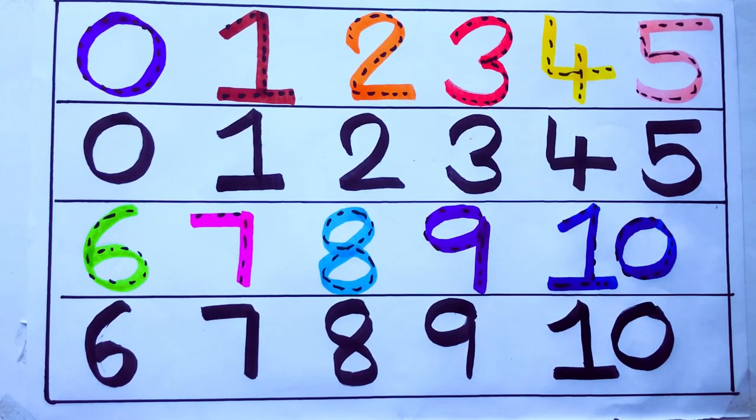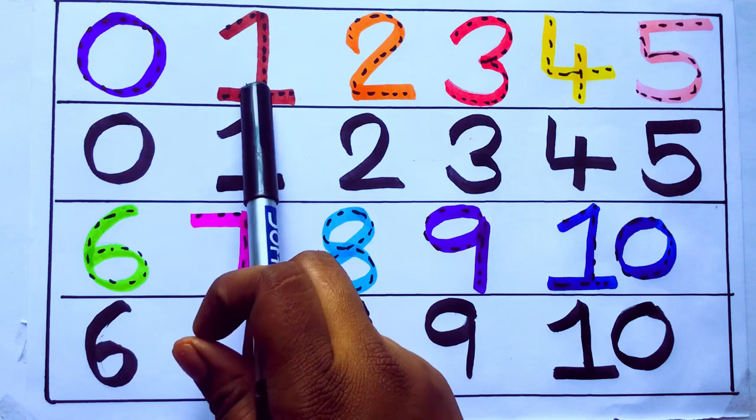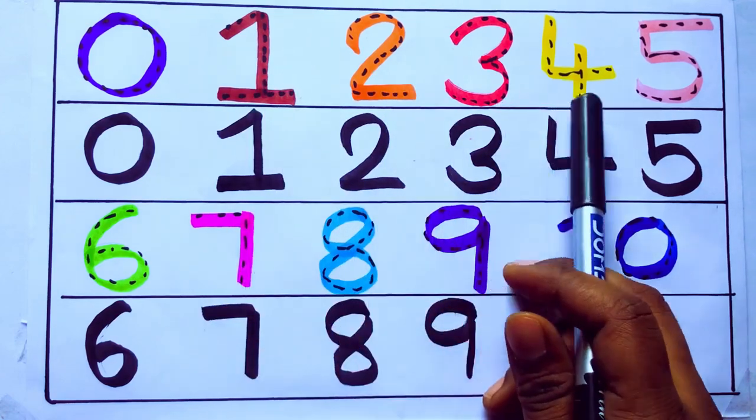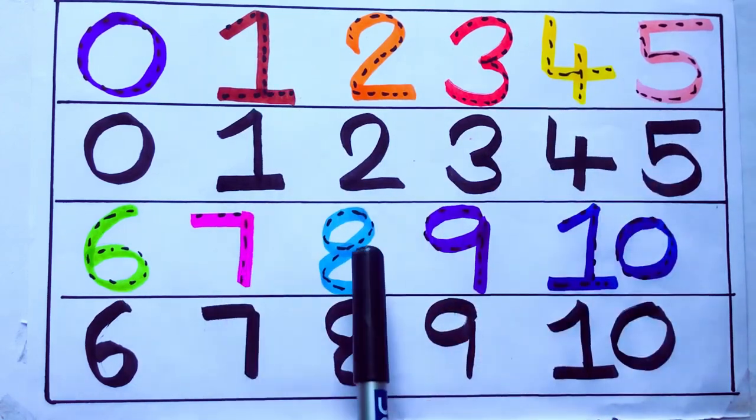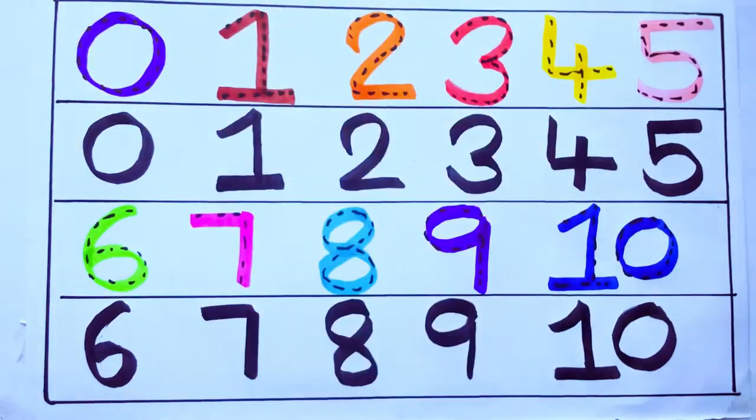One second learning numbers. 0, 1, 2, 3, 4, 5, 6, 7, 8, 9, 10. Okay. Bye kids.